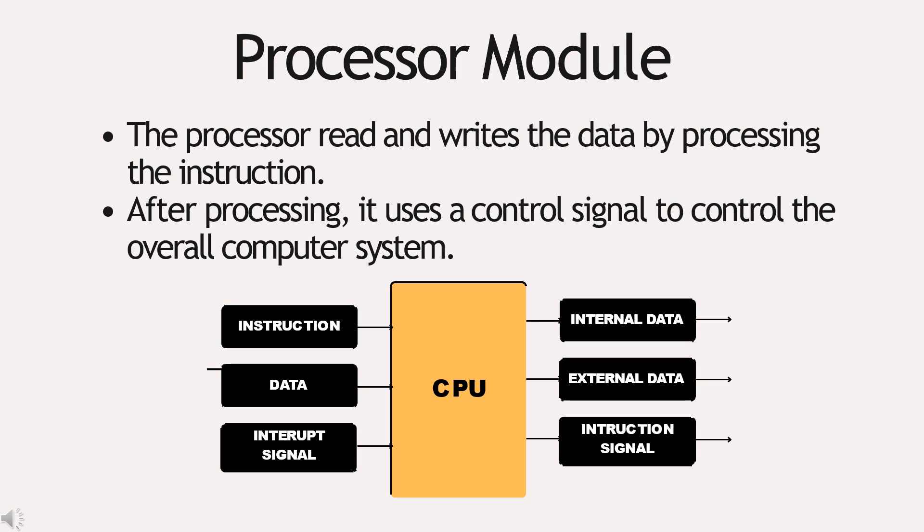The processing module reads and writes the data by processing the instruction. As you can see here, as an input, instruction data and interrupt signal is taken in by the CPU. After processing, it uses the control signal to control the overall computer system. Like here, you can see the internal data, external data, and instruction signal is passed on to the whole computing system.